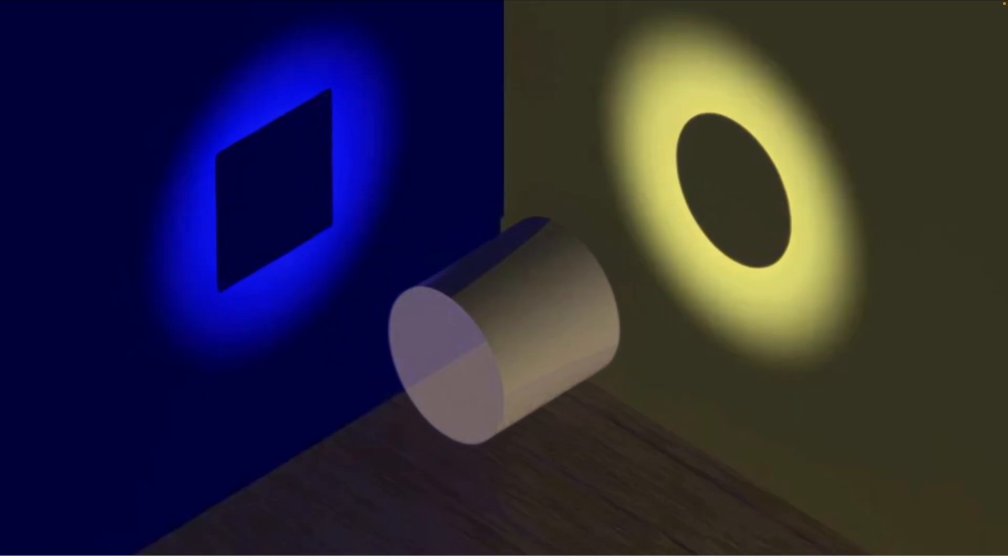And finally, the shape of the object. Change the angle of the light and the same cylinder can cast a square shadow or even a circle. So the same object can make different shapes of shadow when we change the angle of it.